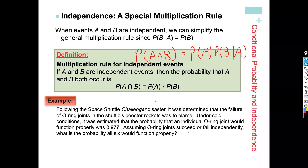Here's an example of independent events. The failure of O-ring joints in the shuttle's booster rockets was to blame in a disaster. Under certain conditions, it was estimated that the probability that an individual joint would function properly was 0.997. Assuming these joints work independently, what is the probability of all six functioning properly? Each one — the first, second, third, fourth, fifth, and sixth — all have to work.